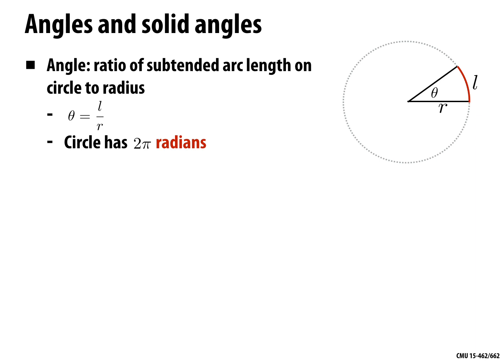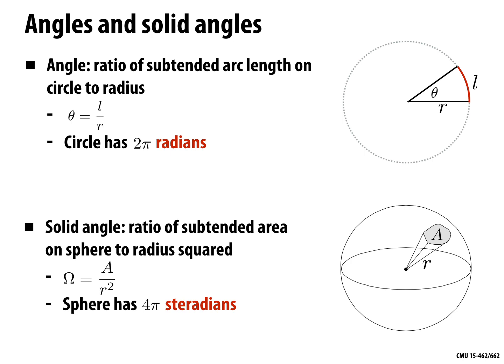A related concept is the solid angle. Rather than an arc on a circle, we have a little patch of area A on a sphere. The solid angle is the ratio of this area to the squared radius: omega equals A over r squared. The total sphere has 4 pi steradians — the surface area of the unit sphere is 4 pi, so dividing by r squared gives 4 pi regardless of radius. Solid angle generalizes our usual notion of angle to the sphere in a very natural way.